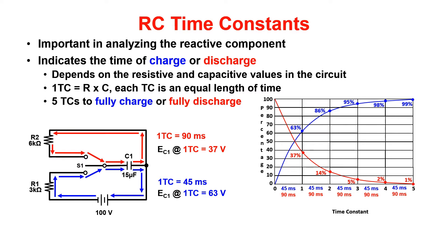One time constant or one TC is an equal length of time. To calculate one TC, the formula for capacitors is R times C. It takes five TC for a component to fully charge or fully discharge.